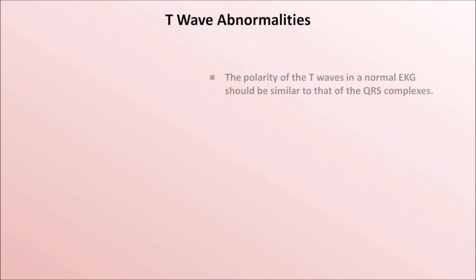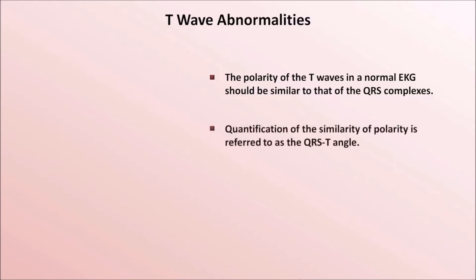With T waves, their polarity in a normal EKG should be similar to that of the QRS complexes. Quantification of the similarity of polarity is referred to as the QRST angle. When evaluating only the six frontal EKG leads, the QRST angle is simply the difference between the QRS axis and the T wave axis, which can either be taken from the computer's calculation or estimated using a similar technique to that used for estimating the QRS axis.